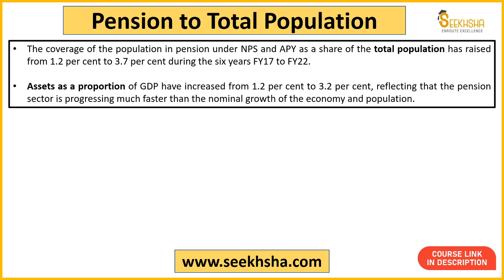Coverage of population in pension under NPS is 1.2% during the six-year period, meaning 1.2 out of 100 people in the total population have NPS. The figure for total pension schemes is 3.7% of the total population. Pension fund assets as a proportion of GDP grew from 1.2% to 3.2%, meaning the pension sector is growing at a much faster speed than the economy's nominal growth or population growth — this is a huge growth in five years.